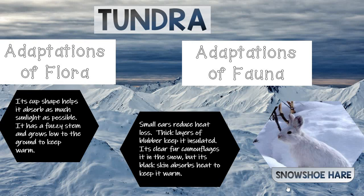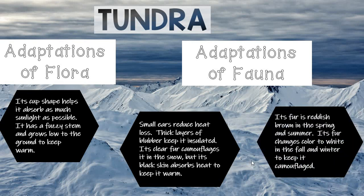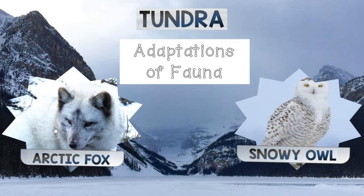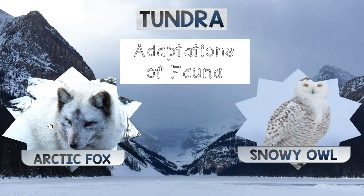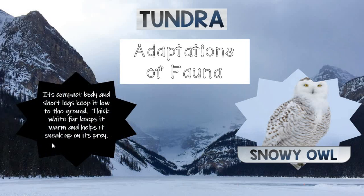Another fauna in the tundra is the snowshoe hare, which has an unusual adaptation: its fur is reddish brown in the spring and summer, then actually changes color to white in the fall and winter to help it stay camouflaged. The arctic fox is another tundra fauna. Arctic foxes have very compact, short bodies that help them stay low to the ground where it's warmest. They also have a very thick white fur that keeps them warm and camouflaged so they can sneak up on prey.